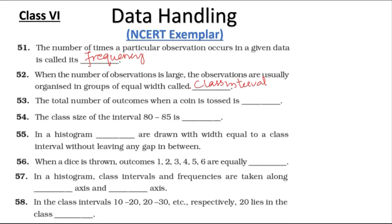Question 53: The total number of outcomes when a coin is tossed is 2, because there will be head or tail. Question 54: The class size of the interval 80 to 85 is 5, because the upper limit is 85, the lower limit is 80, and the difference is 5.